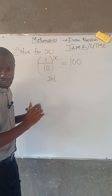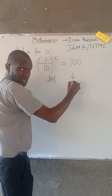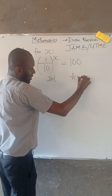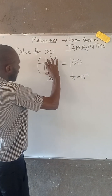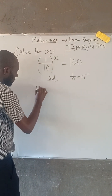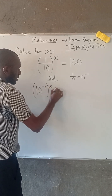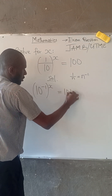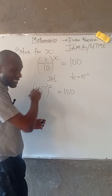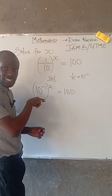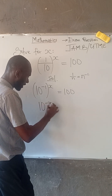Now, recall that if I have 1 divided by n, this can be expressed as n to the power of negative 1. So therefore, we can rewrite this as 10 to the power of negative 1, all raised to the power of x, equal to 100. Simplifying the index: minus 1 times x is minus x, giving us 10 to the power of minus x.